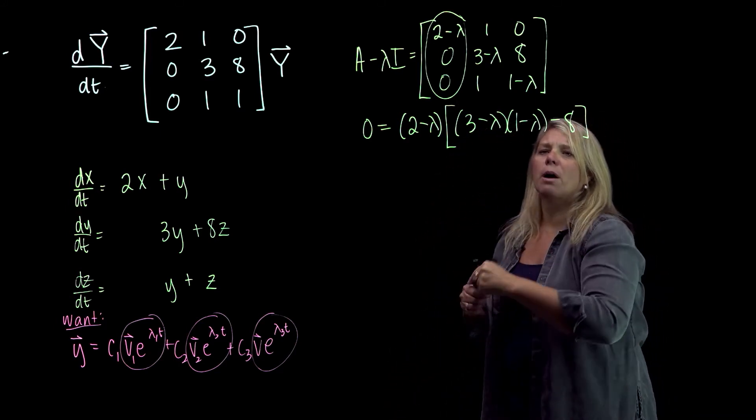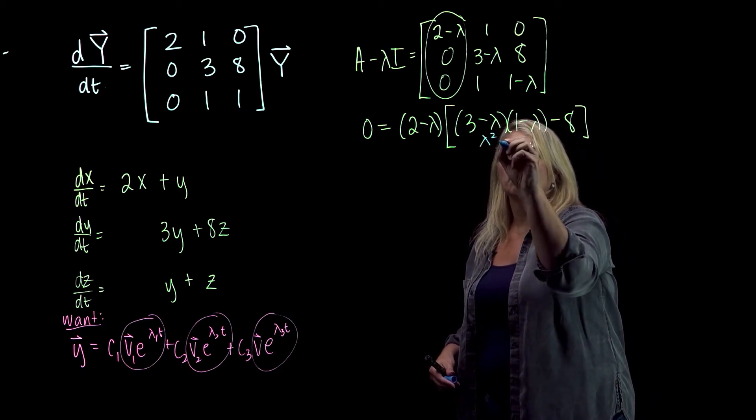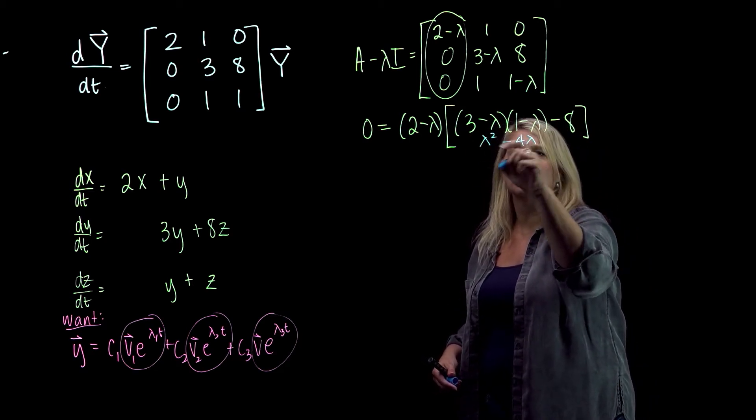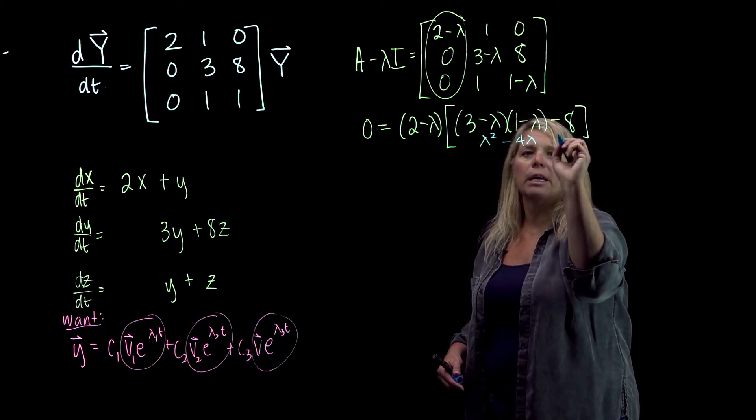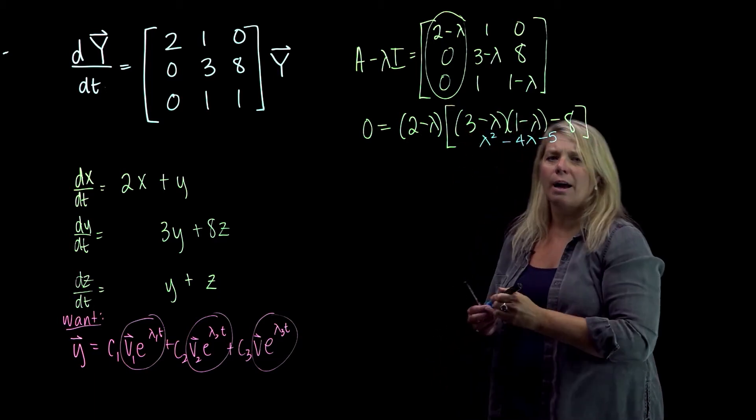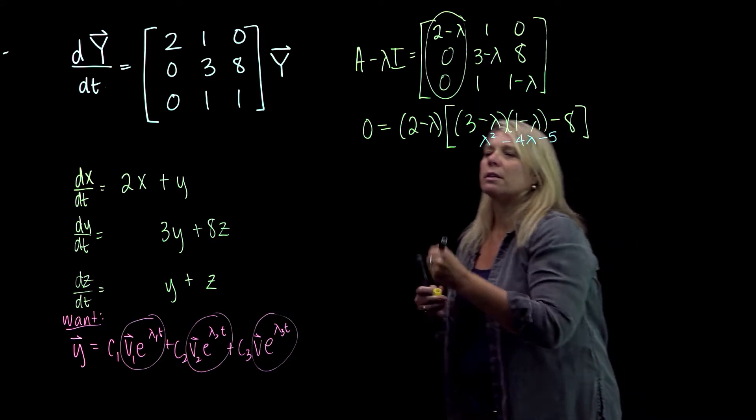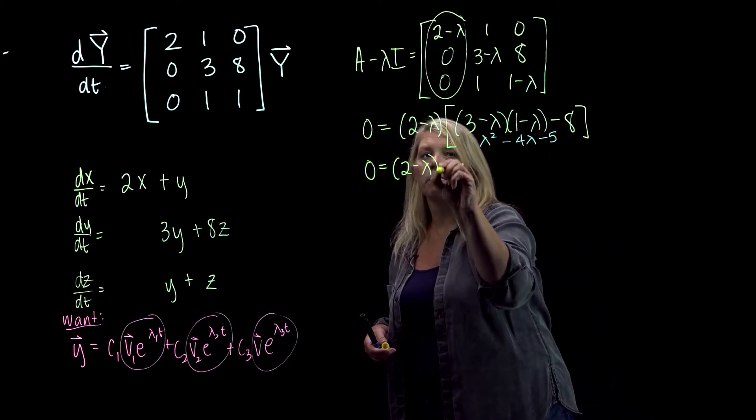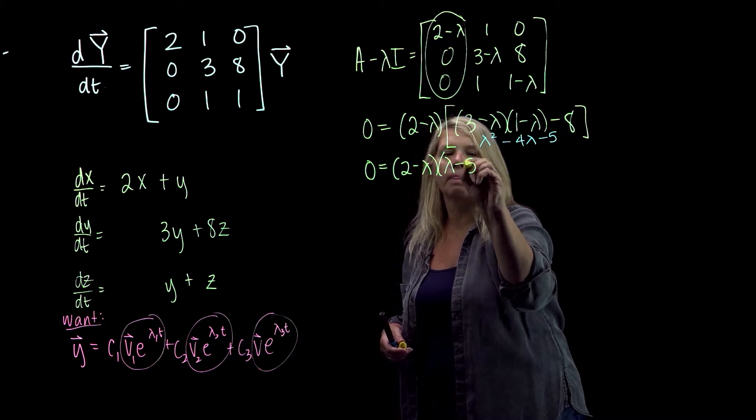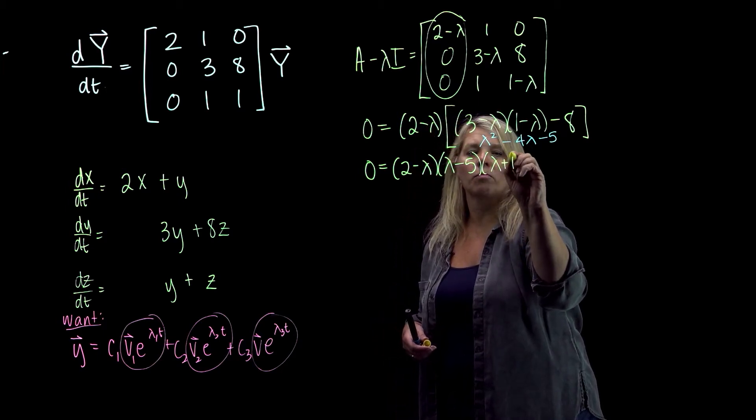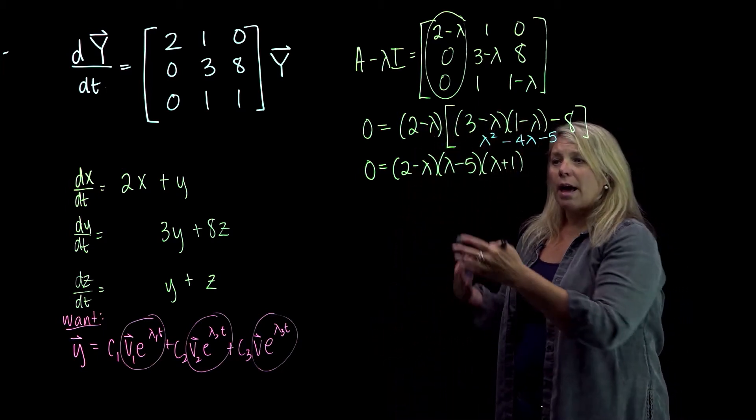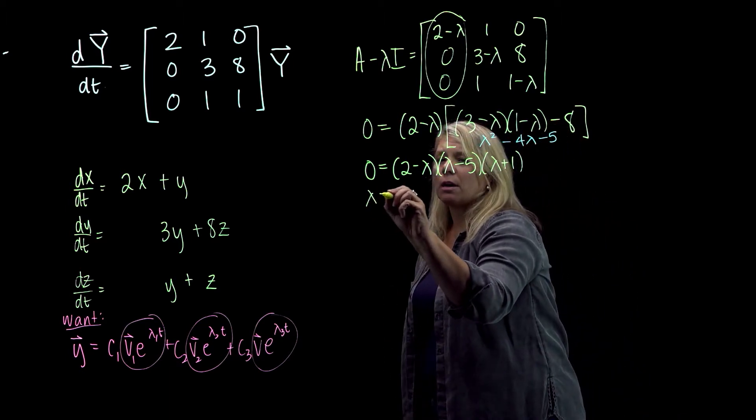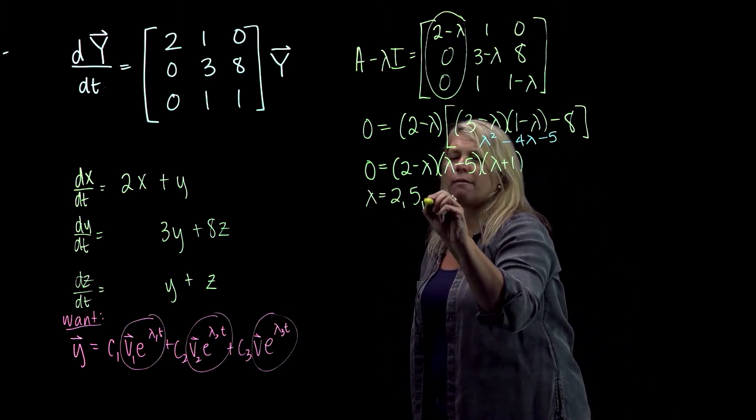Just write down below here what you get. So when you foil this part all out, you'll get lambda squared minus 4 lambda plus 3 minus 8, so minus 5. And then that factors easily, or you can use quadratic formula if it doesn't. Alright, so that tells me what my eigenvalues are: 2, 5, and negative 1.